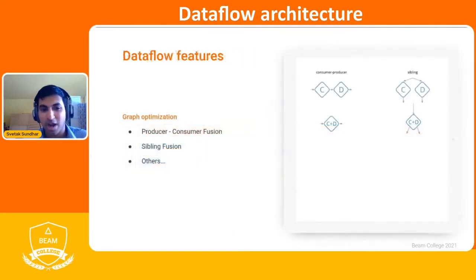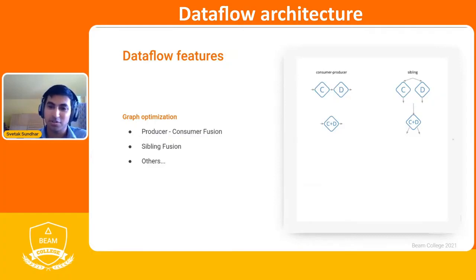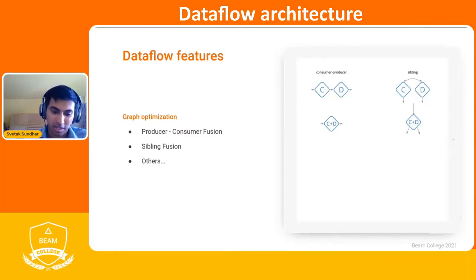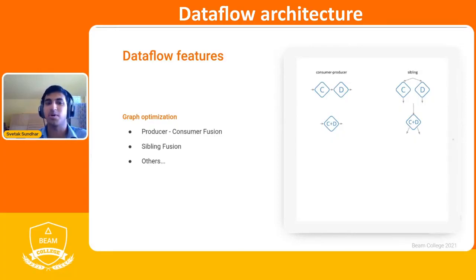Starting with graph optimization — sometimes you have optimizations with how you're running your pipeline, such as consumer-producer fusion or sibling fusion. You can think of graph optimization like compiler optimization: it's going to be optimized to help you run your Beam pipelines with minimal resources and as timely as possible.